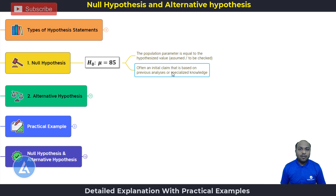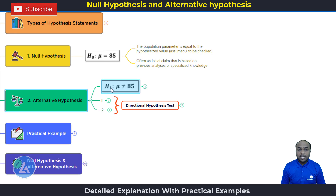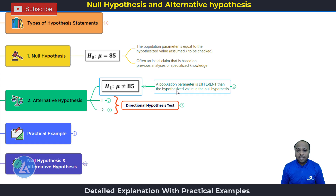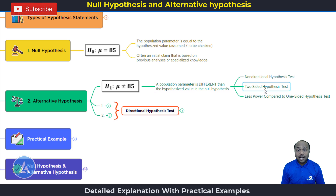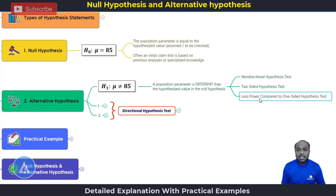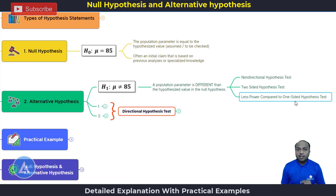Now let's look at the alternative hypothesis. There are three ways to express it. The first one is H1 colon mu is not equal to 85, meaning the population parameter is different than the hypothesis value in the null hypothesis. This is also called a non-directional hypothesis test because we are comparing on both sides — whether it is less than or greater than — we are just checking whether it is different. That is why it is also called a two-sided hypothesis test, and it has less power compared to a one-sided hypothesis test.